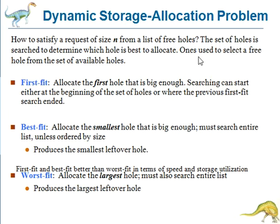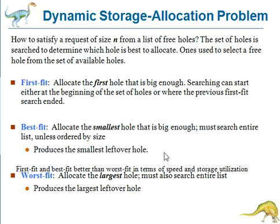These holes are divided into three types. The first one is first fit, best fit, and worst fit. First fit is nothing but the first hole in the list. Best fit is nothing but the smallest hole, and worst fit is nothing but the largest hole. For best fit and worst fit, to identify the smallest and largest hole, we have to search the entire list — whatever free holes are there — to find out the smallest hole and the largest hole.